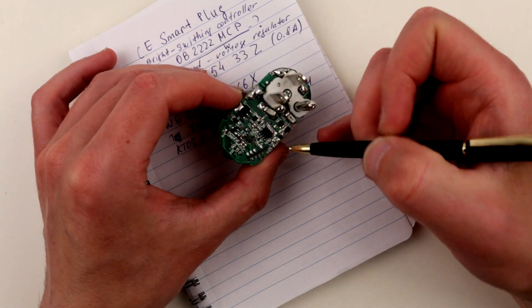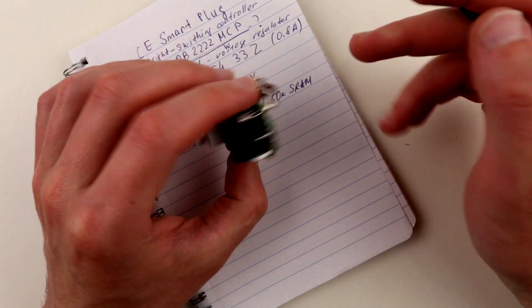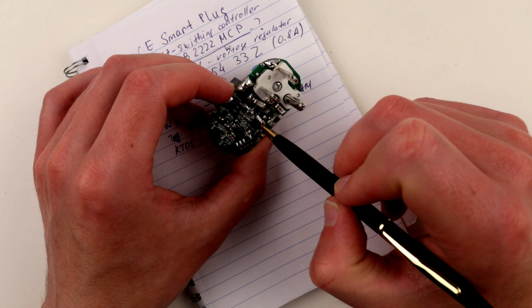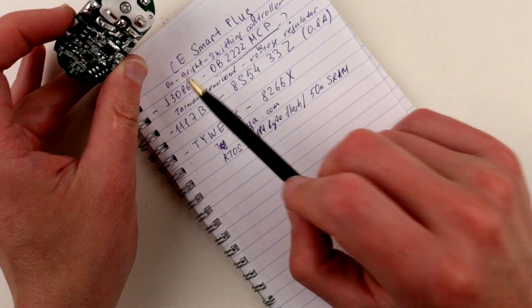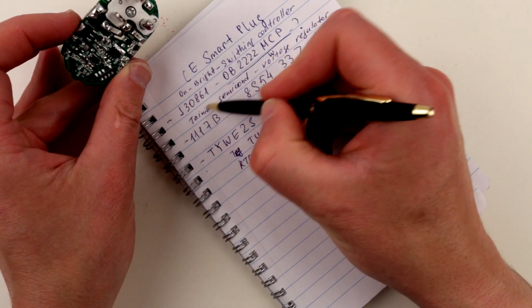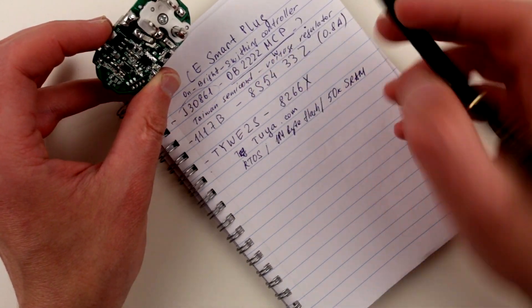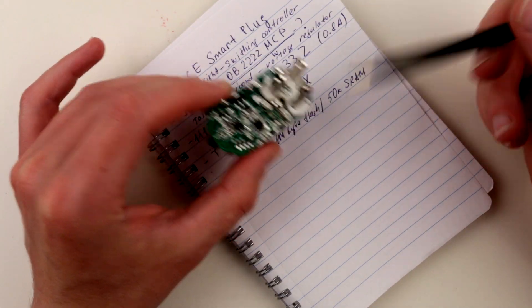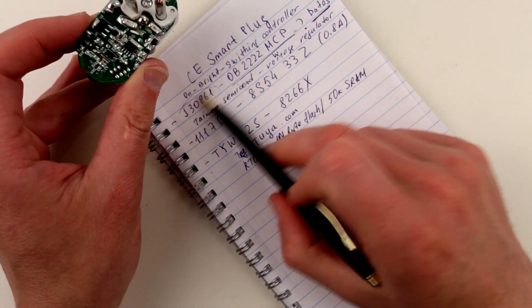On the back side over here there's a bunch of active components which obviously regulate the voltage and supply voltage for the rest of the circuit. What we have here first of all is this switching regulator which I researched as OnBright switching controller. OB2222 MCP is a particular switching controller and the datasheet I can provide. Datasheet is available. This is OnBright.